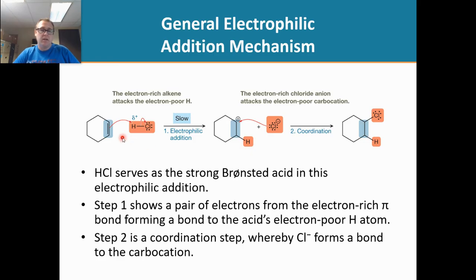Shown here is the mechanism in which the electron-rich pi electrons in the double bond abstract the proton, generating a carbocation, and then the electron-rich chloride will attack the carbocation to form our product.